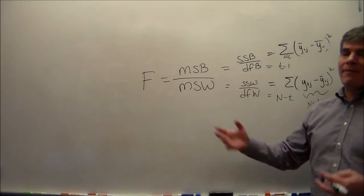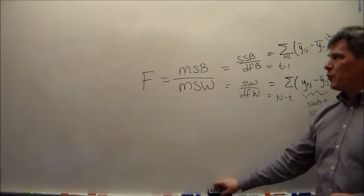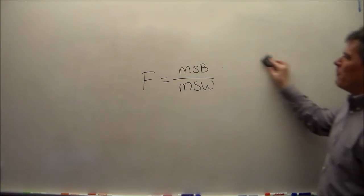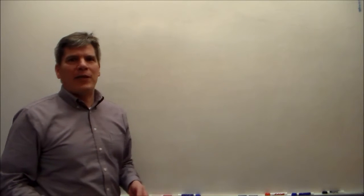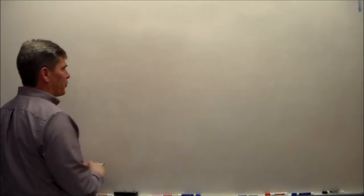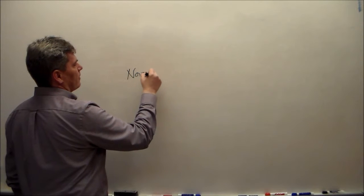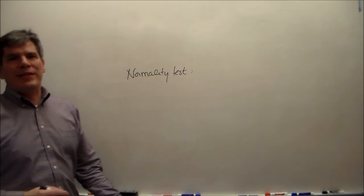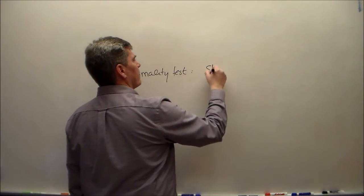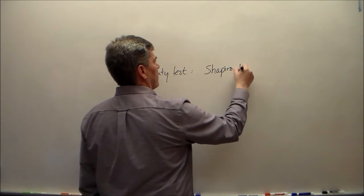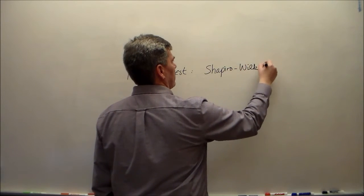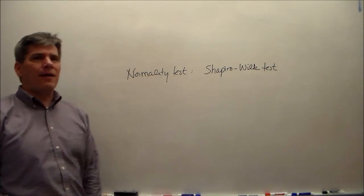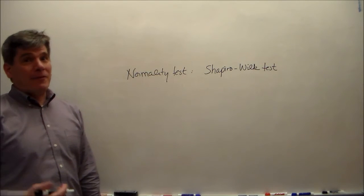Now we know why. Let's go ahead and find out how to test it. There's a lot of tests for normality, and there are tests for equal variances — a lot of those too. For normality, we can use the Shapiro-Wilk test. I like the Shapiro-Wilk test. It's not the only test of normality, but it's the one I'm going to use and focus on. Probably you should focus on it as well for that very reason.